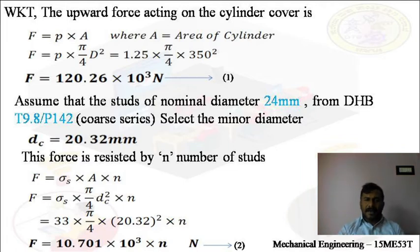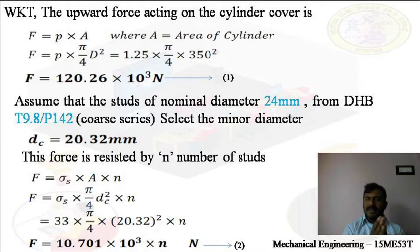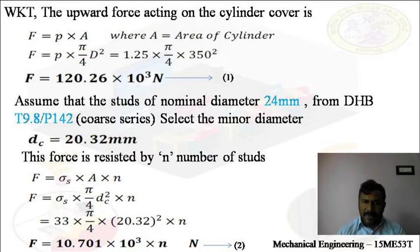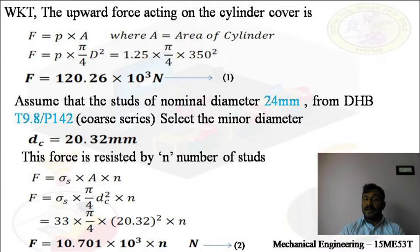This upward force is resisted by N number of studs. Whatever the upward force acting on the cylinder cover, it is resisted by N number of studs. Therefore, F = σS × A × N, where σS is the stress induced in the studs, A is the cross-sectional area of the studs, and N is the number of studs. Substituting values: stress is 33 MPa, that is 33 Newton per mm square, and area is (π/4) × DC² = (π/4) × 20.32² into N. On simplification, F = 10.701 × 10³ × N Newton.